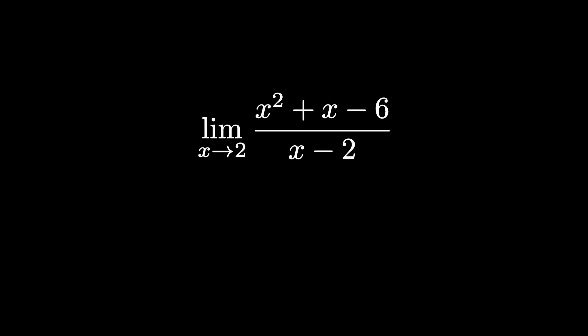Let's go over how to solve this following limit. We have the limit as x approaches 2 of x squared plus x minus 6, all over x minus 2.